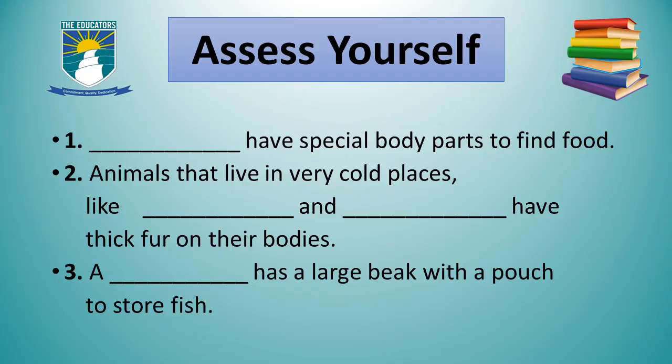Dear students, I hope you understood each and every point of this lesson. Here is a short assessment for you so that you can assess yourself. First, dash have special body parts to find food. Second, animals that live in very cold places like dash and dash have thick fur on their bodies. Third, a dash has a large beak with a pouch to store fish. Try and write down the answers within five minutes.